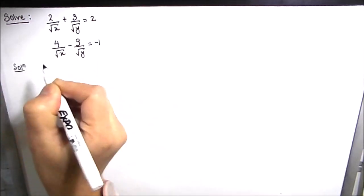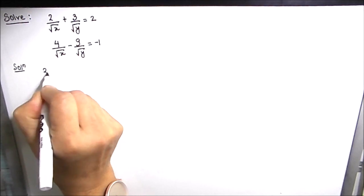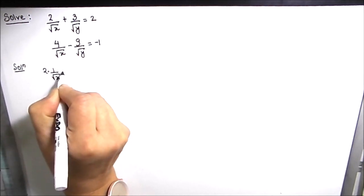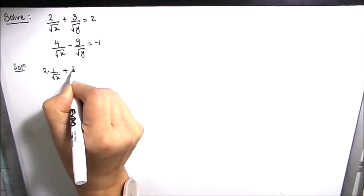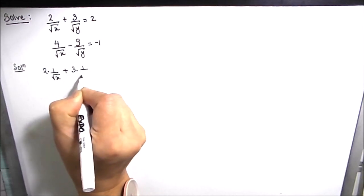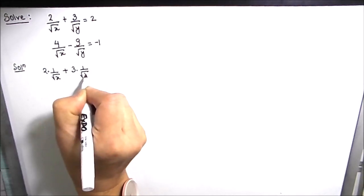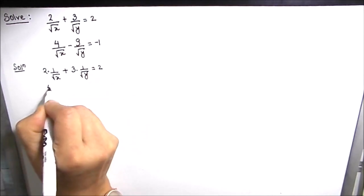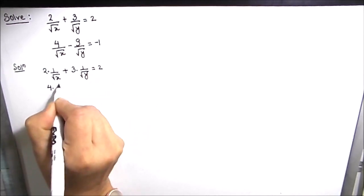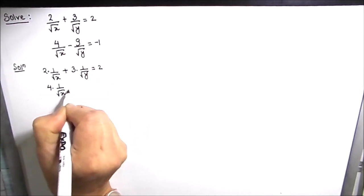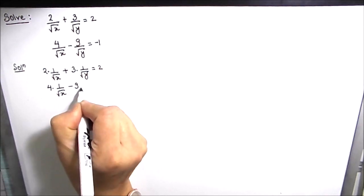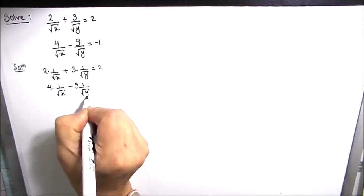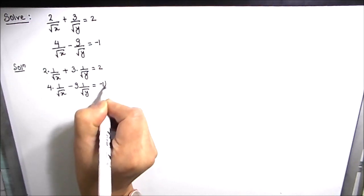These equations can be written as 2 times (1 over root x) plus 3 times (1 over root y) is equal to 2, and the second equation is 4 times (1 over root x) minus 9 times (1 over root y) is equal to negative 1.